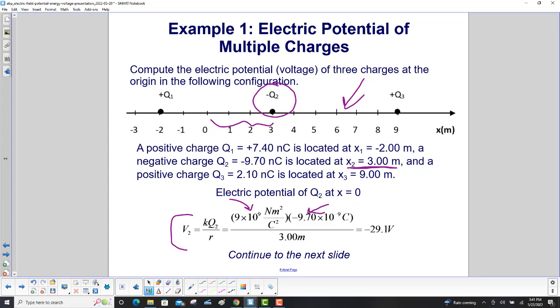The nice thing about the math here is 10 to the ninth times 10 to the minus ninth just cancels out. That gives you 10 to the zero, which is one. Divide nine by three, you get three. Then it's three times 9.7. Make sure you have the negative, and it's negative 29.1 volts.